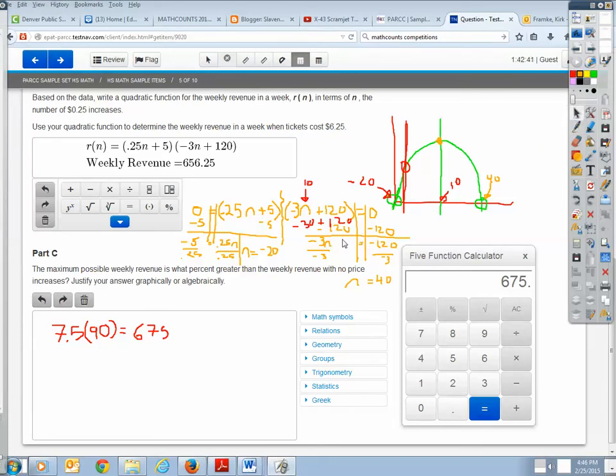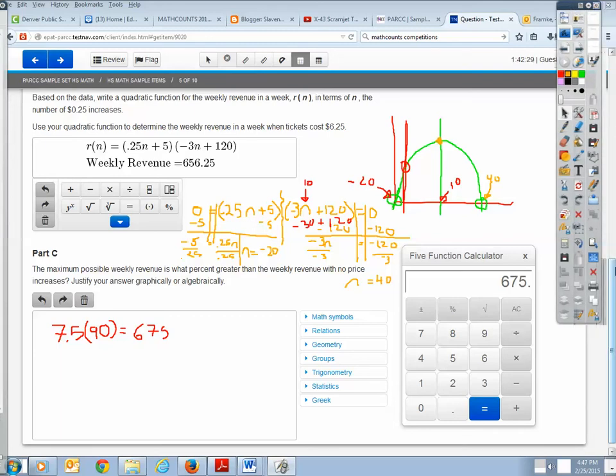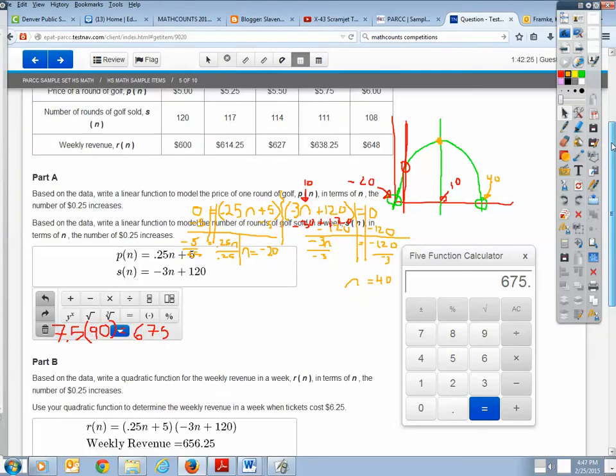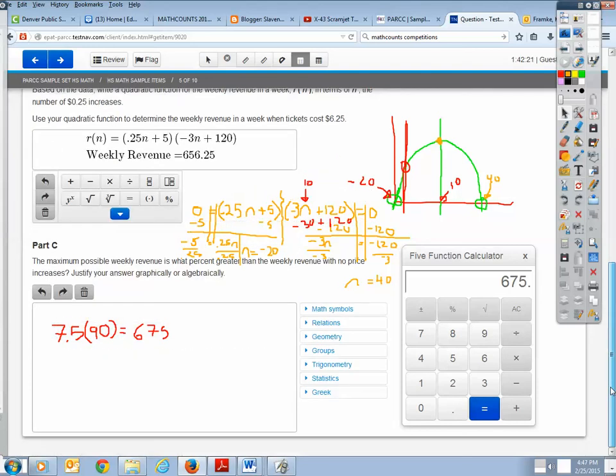So wouldn't it be nice if we're done? But we're not. Because it asks the maximum possible weekly revenue is what percent greater than the weekly revenue. Well, I mean, this problem by itself takes forever. So let's go back up, and so our initial revenue is $600. So if my original revenue is $600, and now I'm making $675, that means I have $75 more that I make every week. Well, what percent is $75 of my original $600? So $75 divided by my $600 equals, so that means I have a revenue increase of 12.5%. Oh my goodness. That was a long problem. But that is your final answer.